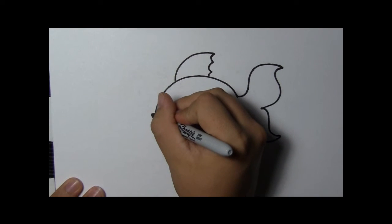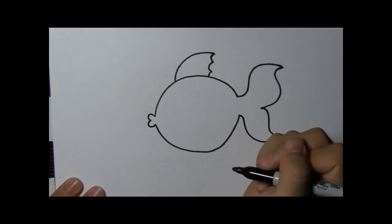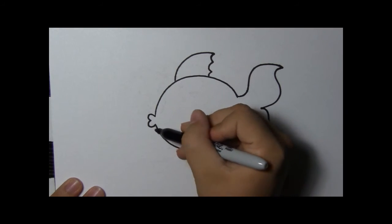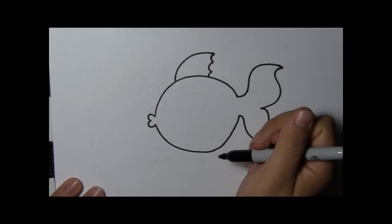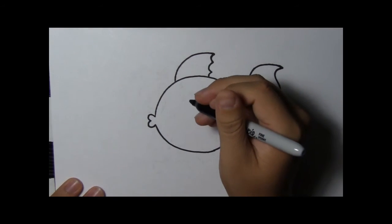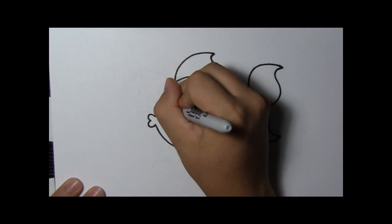Now we're going to make the mouth of the fish by making two half circles. Let's give our fish an eye.